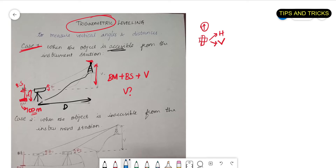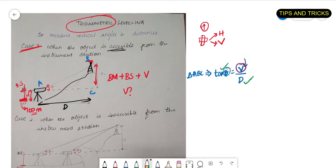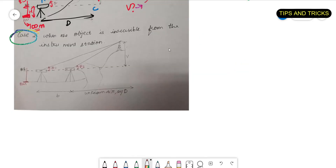The problem here is how we can find V. Let me name this triangle A, B, and C. In triangle ABC, tan θ equals opposite over adjacent, which gives me V divided by d. I already know d and I already know my angle θ, so from this I can find V. When I substitute V in the formula, I will find the RL of the tower.